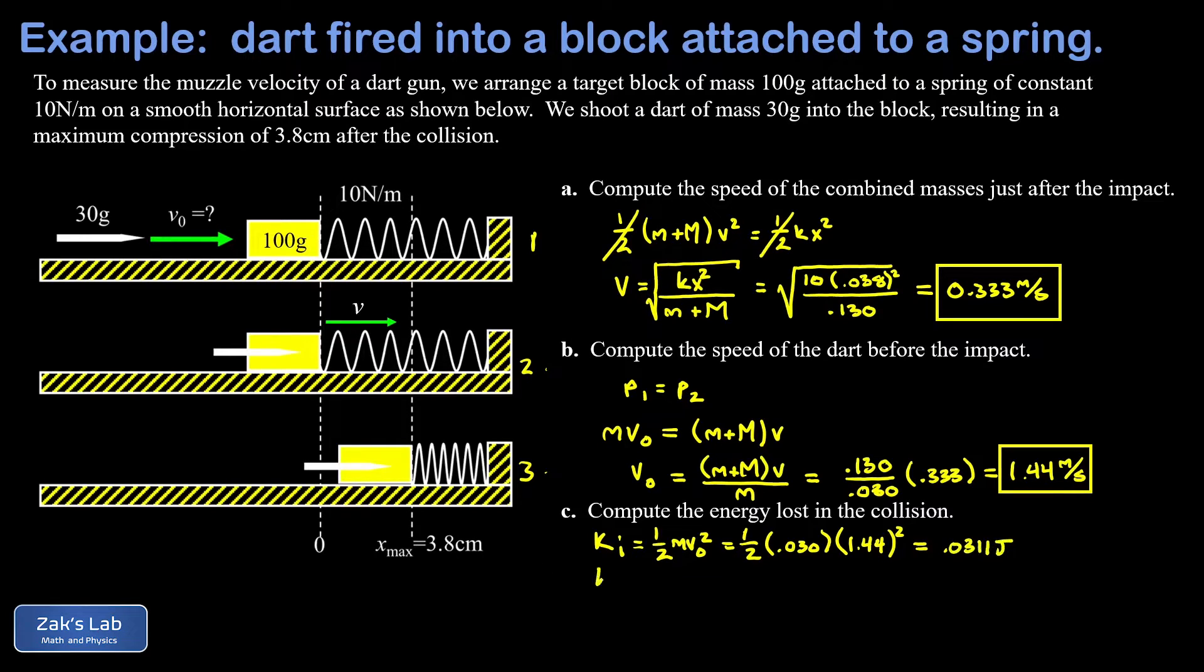Then we compute the final energy. You have a choice here. We could compute the final energy as the kinetic energy of the combined masses before the spring compresses, or we could use the energy stored in the spring at maximum compression. The spring compression process is energy conserving, so either one will give the same answer. I'm going to use the kinetic energy immediately after the collision. Our combined masses were 0.130 kilograms, the speed just after the impact, 0.333 meters per second. When we run the numbers, we get 0.0072 joules.